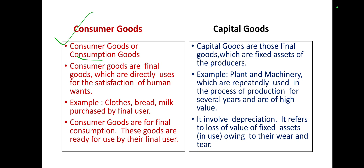Consumer goods, or consumption goods, are final goods which are directly used for the satisfaction of human wants. For example, a consumer purchases ice cream, car, TV, clothes, or milk for final consumption — that is, products purchased by a final user.